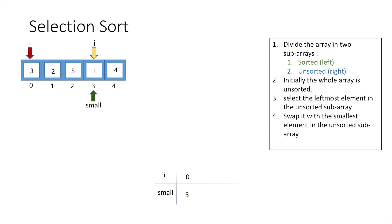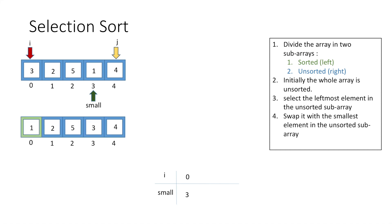Incrementing j, we reach the last element and comparing the values, 4 is greater than 1, so there is no change in small. As we have reached the end of the array, in the last step we swap the values at i and small, and therefore 1 becomes part of the sorted sub-array.